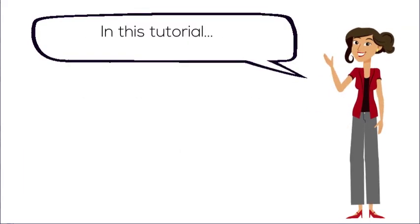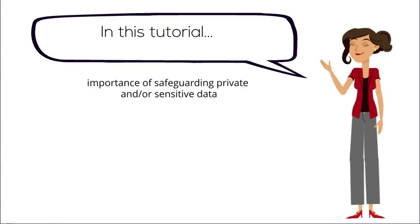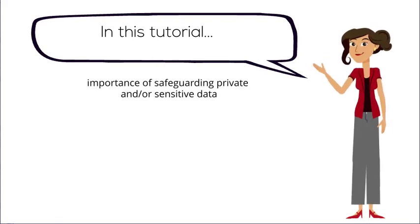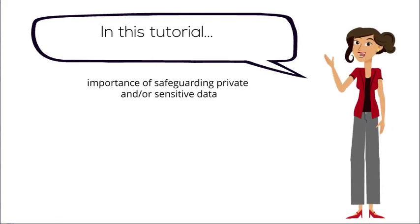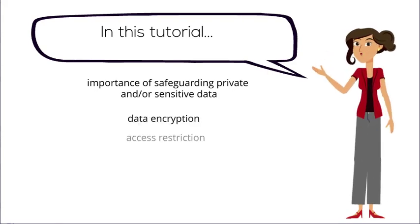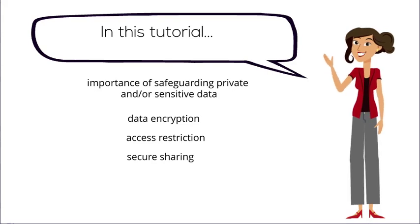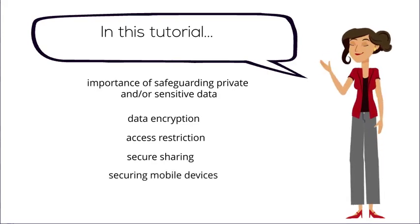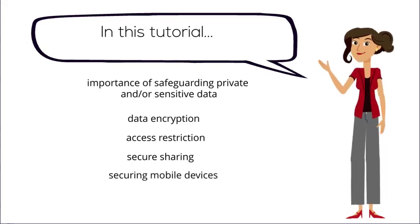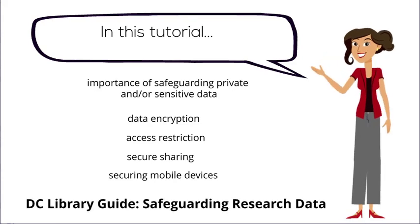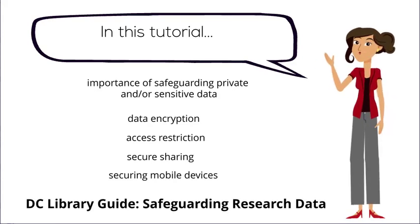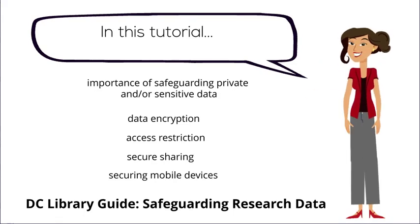In this tutorial, we've learned about the importance of safeguarding private and sensitive data. We've also considered a number of means of doing so, including data encryption, access restriction, sharing files securely with team members, and best practices in securing mobile devices. To learn even more about this topic, see the Library Guide to Safeguarding Research Data in the Faculty Portal on the Library website.